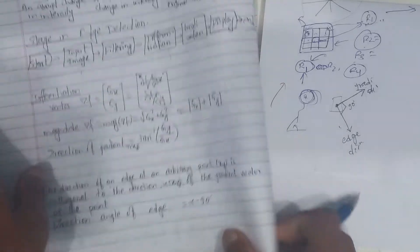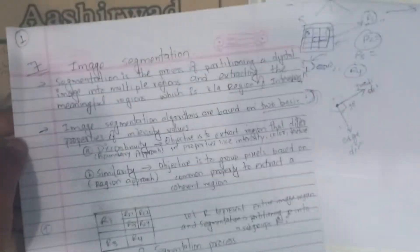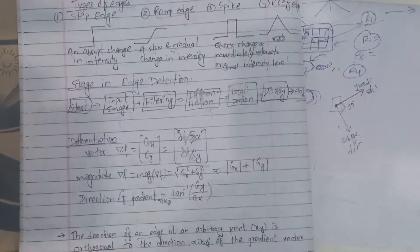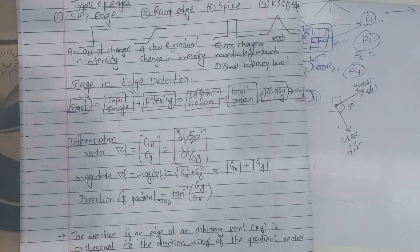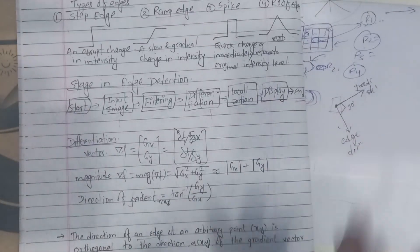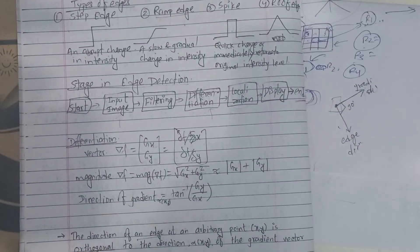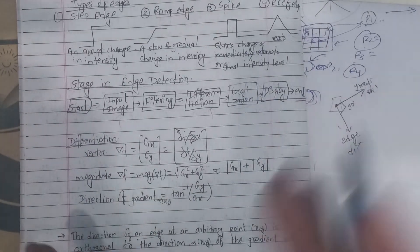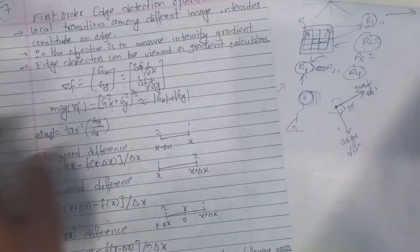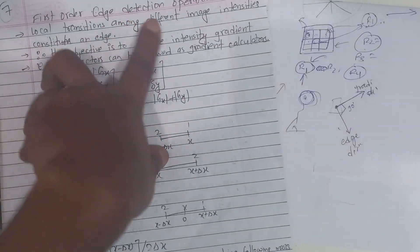Now, what do we need to do? How much edge detection is needed? We need to know the first derivative of the edge. The first derivative operator is used for edge detection.